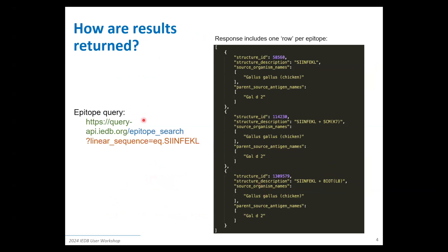When you put it all together — the base API URL, your search endpoint such as epitopes, and your filters such as SINFECL as a linear sequence — you will get back JSON format, or TSV if you specify that. The JSON format will show all the information for those epitopes within the database, in this case three epitopes for SINFECL linear sequences. It returns as an array of JSON objects, one per database row.